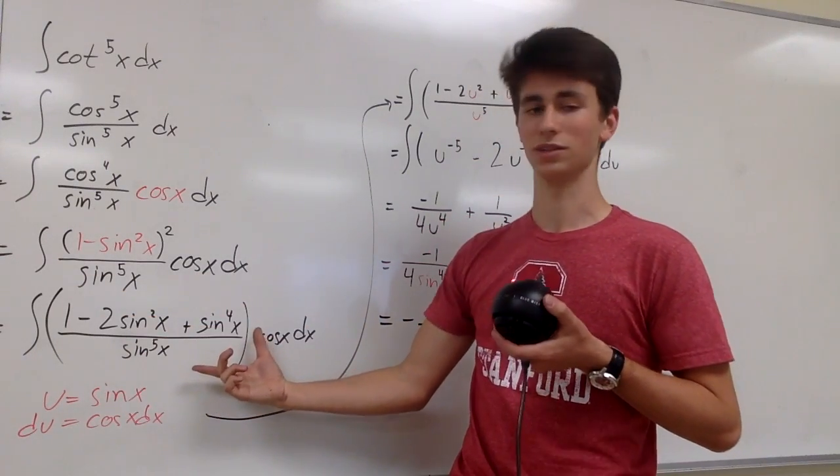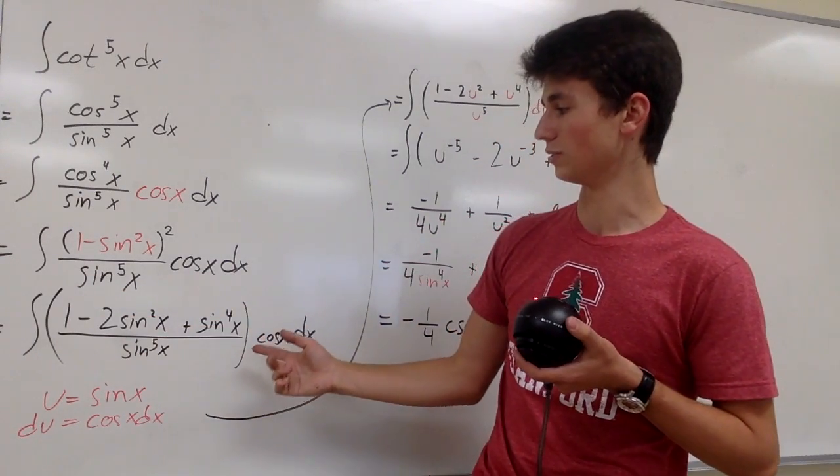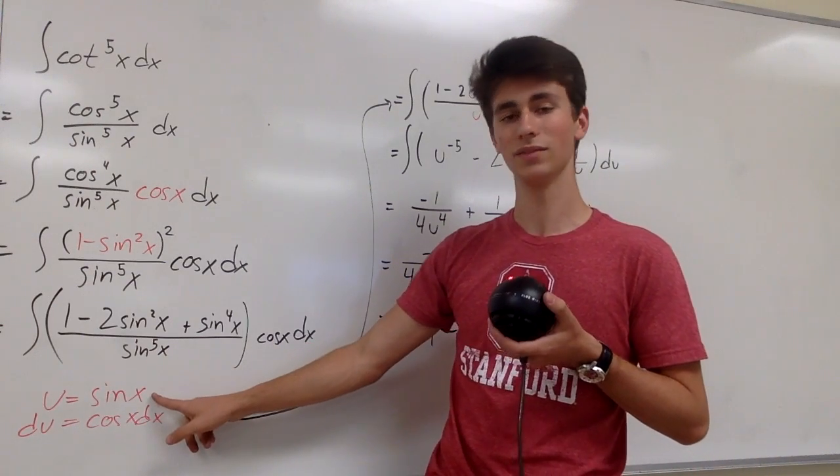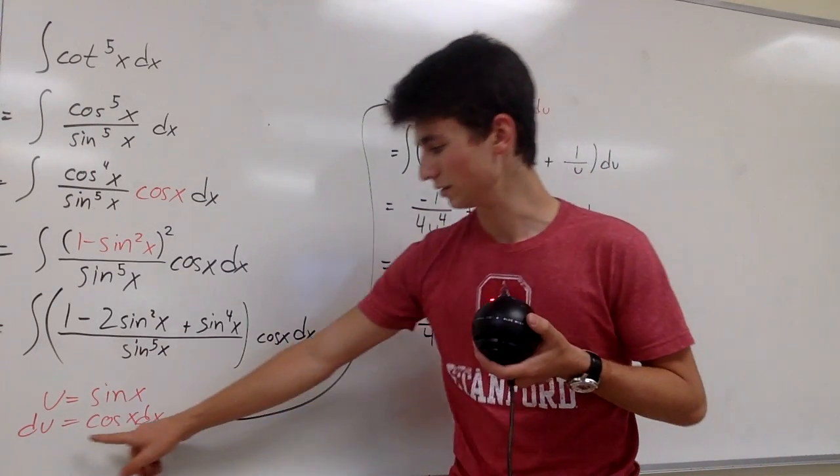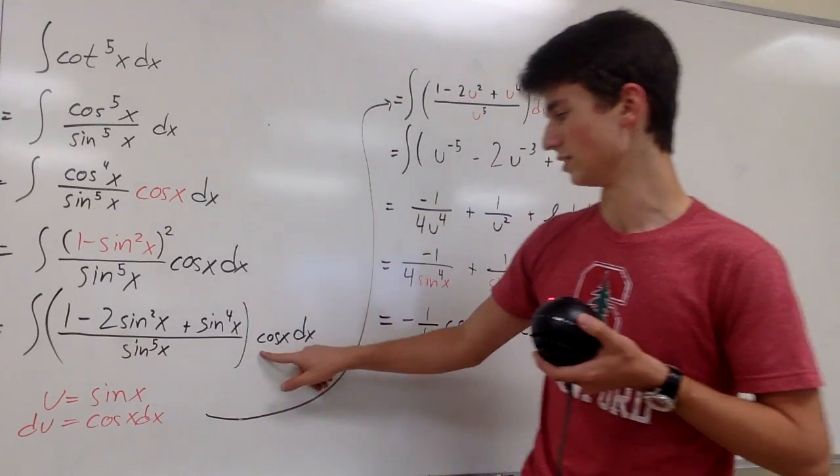And so since this big term here is only in terms of sine of x, we can use a u substitution where u equals sine of x and du equals cosine x dx. And you can see that cosine x dx is our du right here.